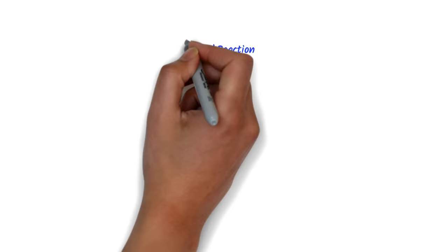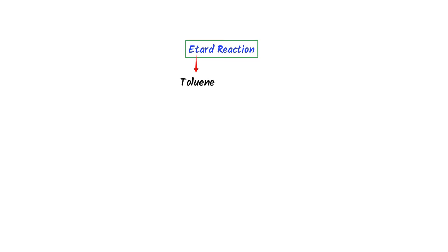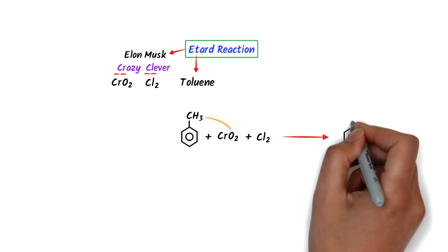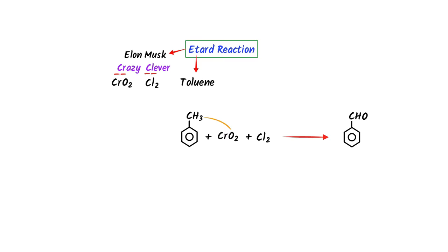Now let me teach you the Etard reaction. The T in Etard reminds me of toluene, so I write toluene: CH3 plus benzene ring. Secondly, E reminds me of Elon Musk — he is crazy and clever. CR in 'crazy' stands for chromium oxide (CrO2Cl2), and CL in 'clever' stands for chlorine. These are the reactants. I replace the three (CH3) by oxygen — CH plus benzene ring with oxygen attached — to get benzaldehyde. This is the Etard reaction.